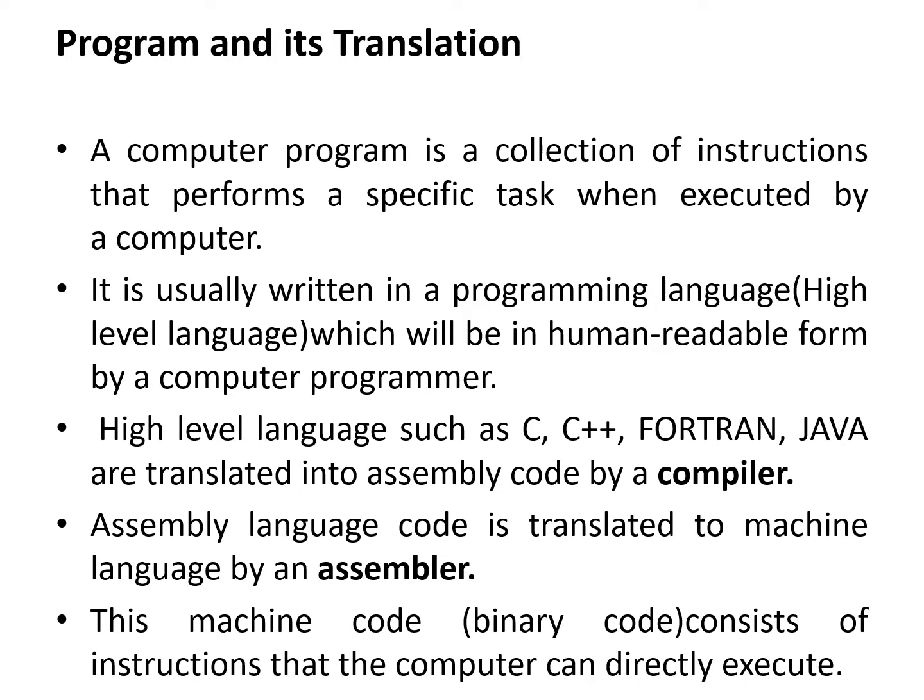The program is translated into assembly code by a compiler, an example of which is given in the next slide. Next, the assembly language code is then translated into machine language by an assembler. This machine code consists of instructions — zeros and ones — that the computer can directly execute.